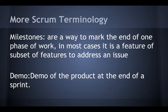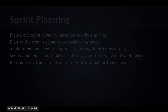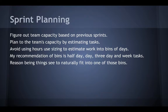Let's cover a couple more Scrum terms. Milestones are a way to mark the end of one phase of work from another. In most cases, it's a feature or subset of features to address an issue. Demo: a team's opportunity to get feedback on a new feature from the company as a whole. They are typically 15-minute meetings where each team is able to showcase the completed feature they worked on. Sprint planning — a lot of people think these are a huge waste of time, and I agree, but they are necessary to the process.